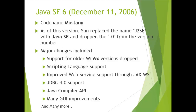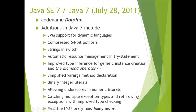Major changes in Java SE 6 include: dropped support for older Windows 9x versions, backward compatibility, scripting language support, improved web services support through JAX-WS, JDBC 4.0 support, Java Compiler API, and many GUI improvements, along with many more new additions.